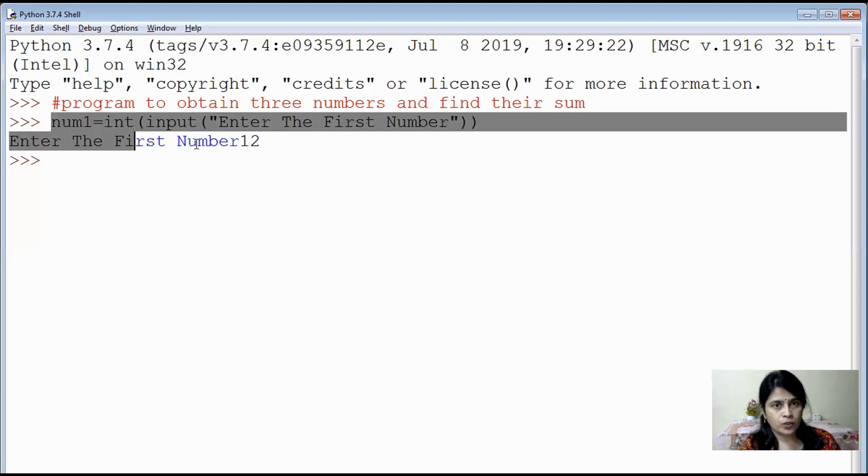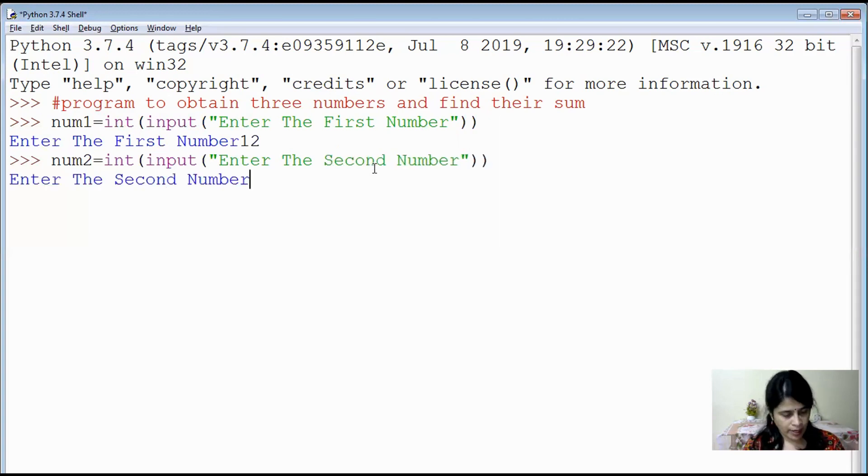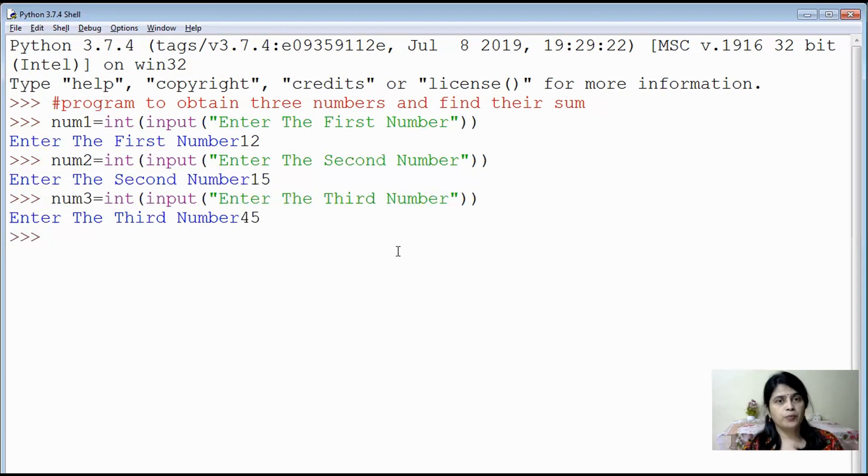Then I'll copy the first code and change the name of the variable to num2. I'll change here: enter the second number. So I enter value, say for example 15 maybe. Then I again copy and paste the code and simply change the name of the variable as num3, because we need to have unique identifiers in our program. Enter the third number. Now I enter maybe 45. So inputs are over. I have given inputs for three numbers.